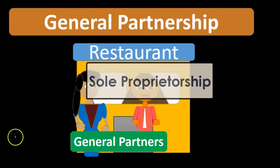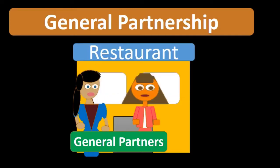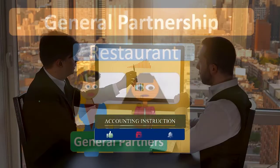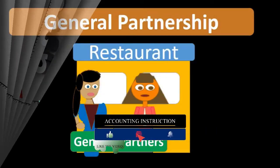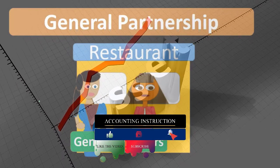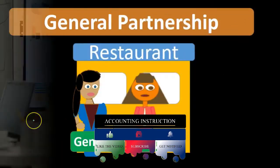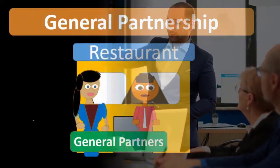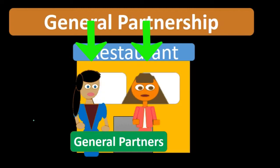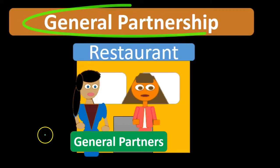One of the drawbacks with a general partnership — as is a drawback with a sole proprietor — is liability, in that the general partners are both going to be liable not only for the assets that they put into the partnership, but could be liable for their personal assets as well. This is as opposed to other types of entities such as a corporation, where there's more of a division in terms of liability protection from the owners.